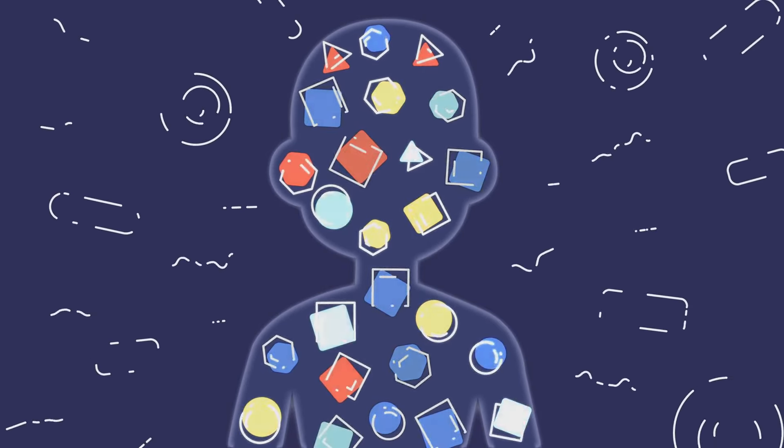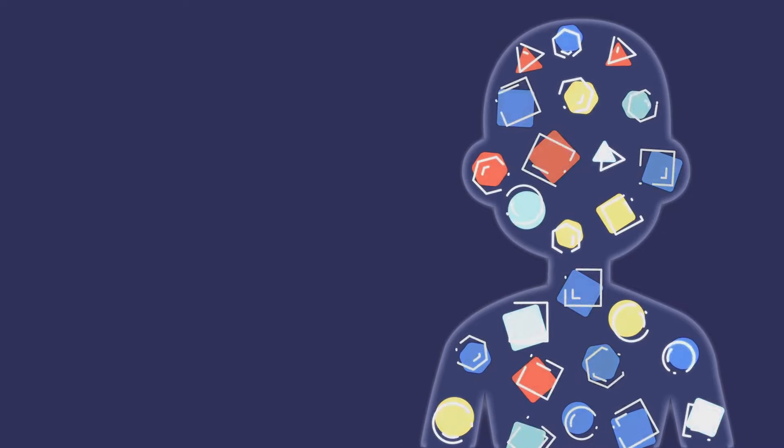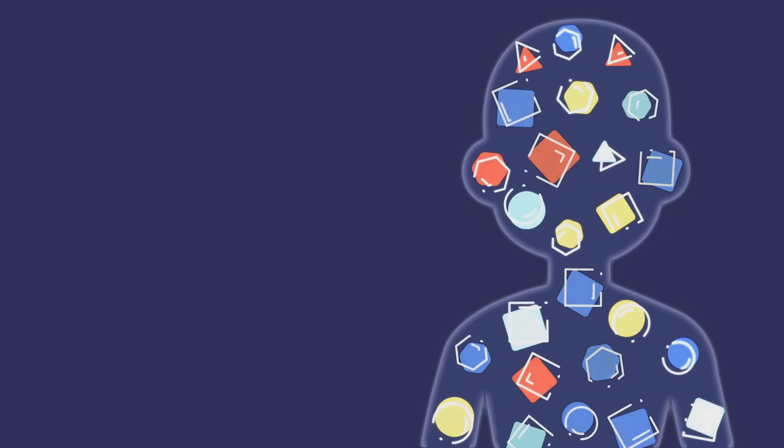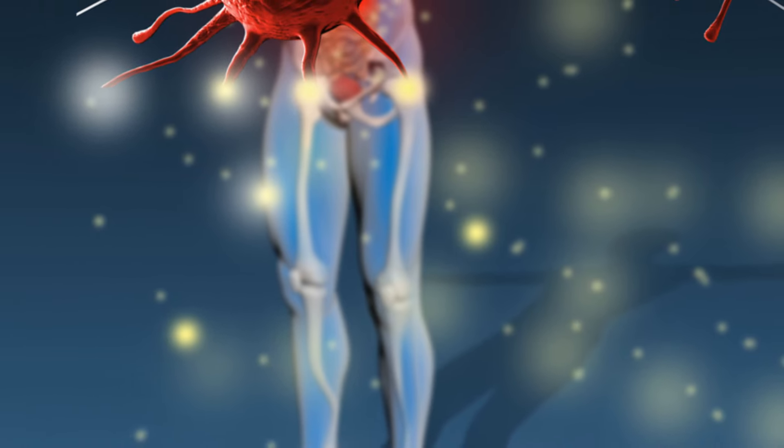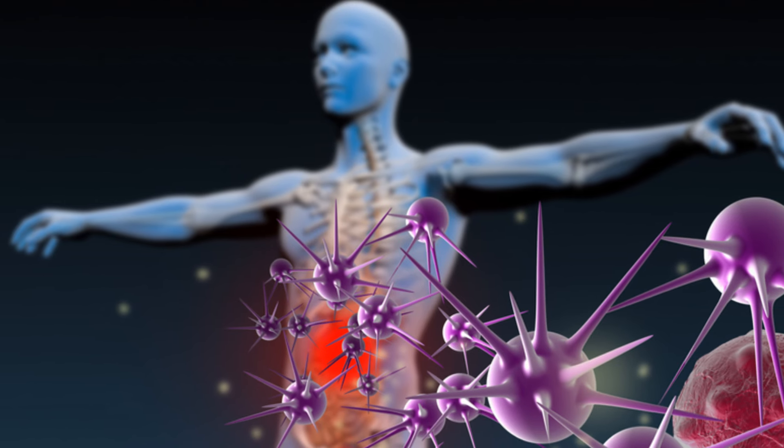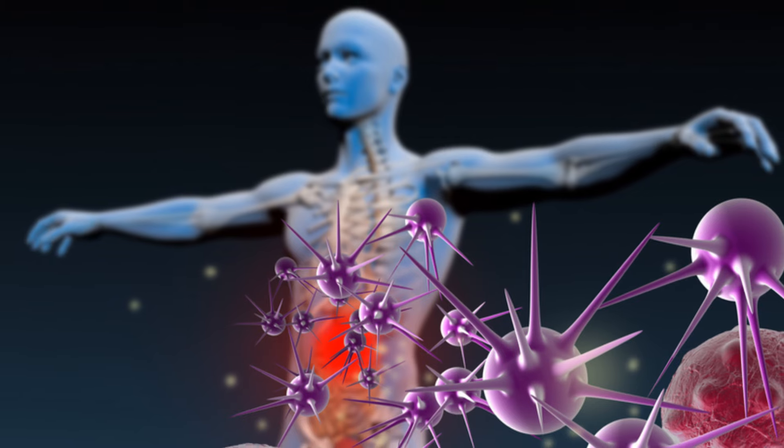But it's not all doom and gloom. Our bodies are not defenseless. We have our immune system, an intricate network of cells and molecules designed to defend us against these microscopic invaders. It's a constant battle, a war fought on a scale too small to see, but with consequences that can shape the course of human history.